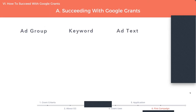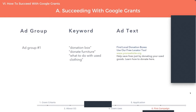Let me illustrate with an example. We have one ad group and three keywords: 'donation box,' 'donate furniture,' and 'what to do with used clothing.' Within an ad group, all the keywords share the same ad text. So if I write one version of ad text — say, 'Find local donation boxes, use our free locator tool' — all the keywords are going to display this ad whenever someone searches for it. That is a great ad for the first keyword 'donation box,' but it's less relevant to 'donate furniture.' If I wanted to donate furniture and saw the ad, I might be thinking: can this donation box fit my couch? So you can split your keywords into separate, specific ad groups and write ad text specific to each one.